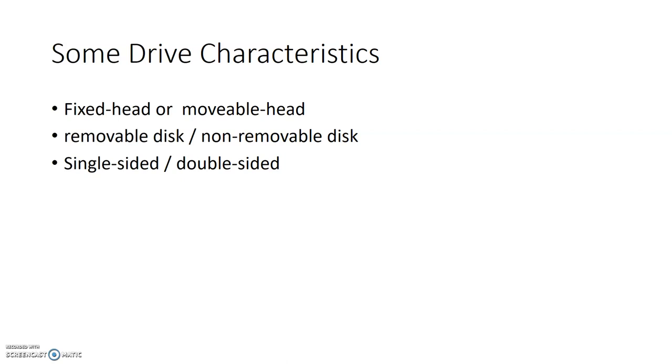If you guys ever heard in the old days, they had these things called floppy disks, or even had things called zip drives, or they even had things called jazz drives. Those were removable. So a removable disk where the media can be removed from the drive. The magnetic disks that we have, it's a non-removable disk.